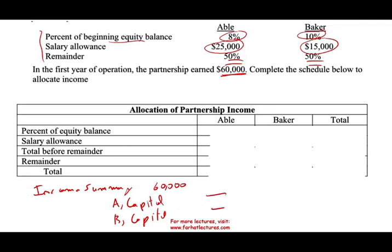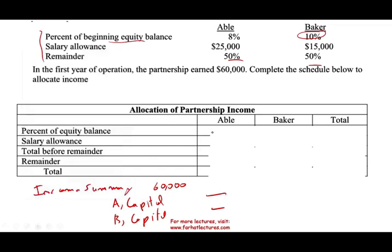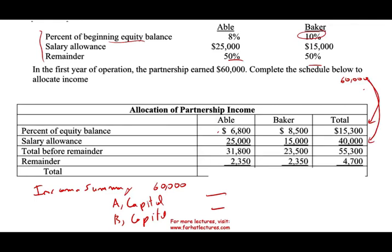Following the agreement: Abel gets 85,000 × 8% = $6,800. Baker gets 85,000 × 10% = $8,500. So far we've allocated $15,300. Next, salary allowances: 25,000 to Abel and 15,000 to Baker — an additional $40,000. Total allocated so far is 55,300, leaving a remainder of $4,700, which is allocated 50-50.